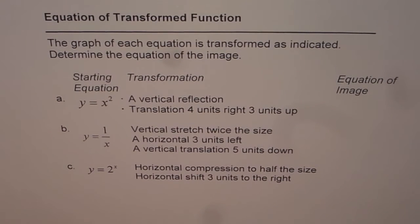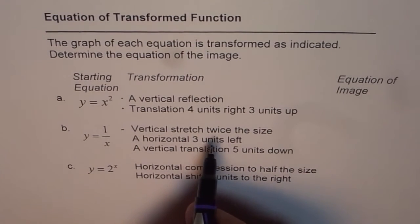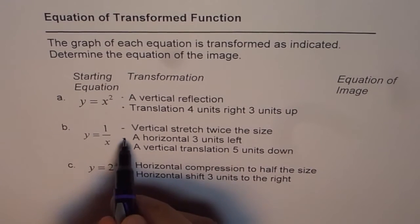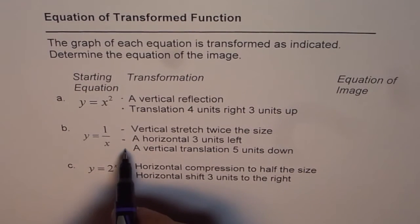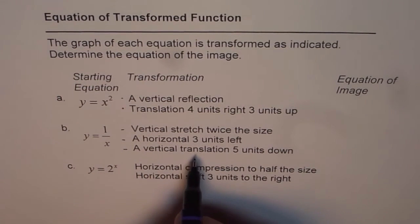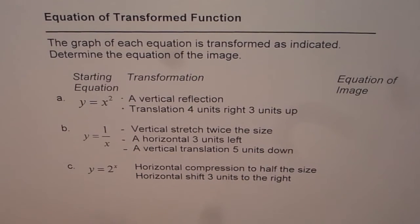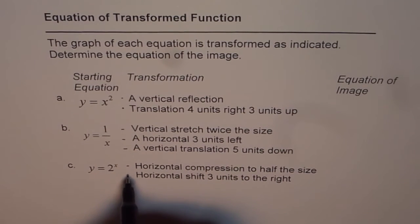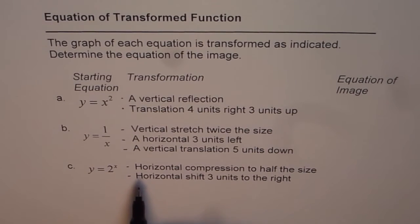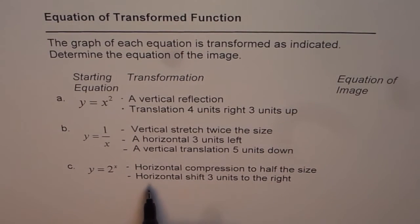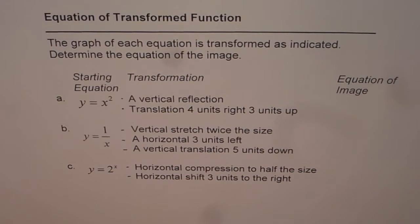Part b is y equals 1 over x, where the transformations are a vertical stretch to twice the size, a horizontal translation 3 units left, and a vertical translation 5 units down. For part c, the exponential function 2 to the power of x has transformations of a horizontal compression to half the size and a horizontal shift 3 units to the right. Write down the equations and then check with my answer.